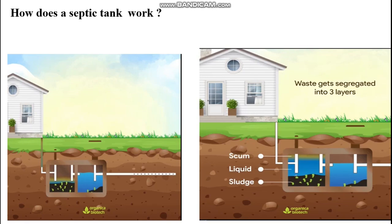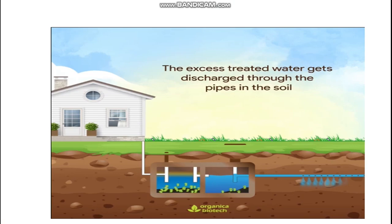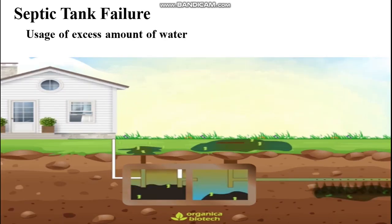How does a septic tank work? First, sewage is disposed from the house through the inlet pipe to the septic tank. Solids entering the first chamber settle to the bottom forming sludge, while lighter solids such as grease and organic waste float on top forming scum. Treated liquid enters the second chamber, known as effluent. Microbes naturally present in the tank degrade the sludge. The treated water passes through the baffle to the second compartment, and finally the treated effluent is discharged through perforated pipes to the leach field.